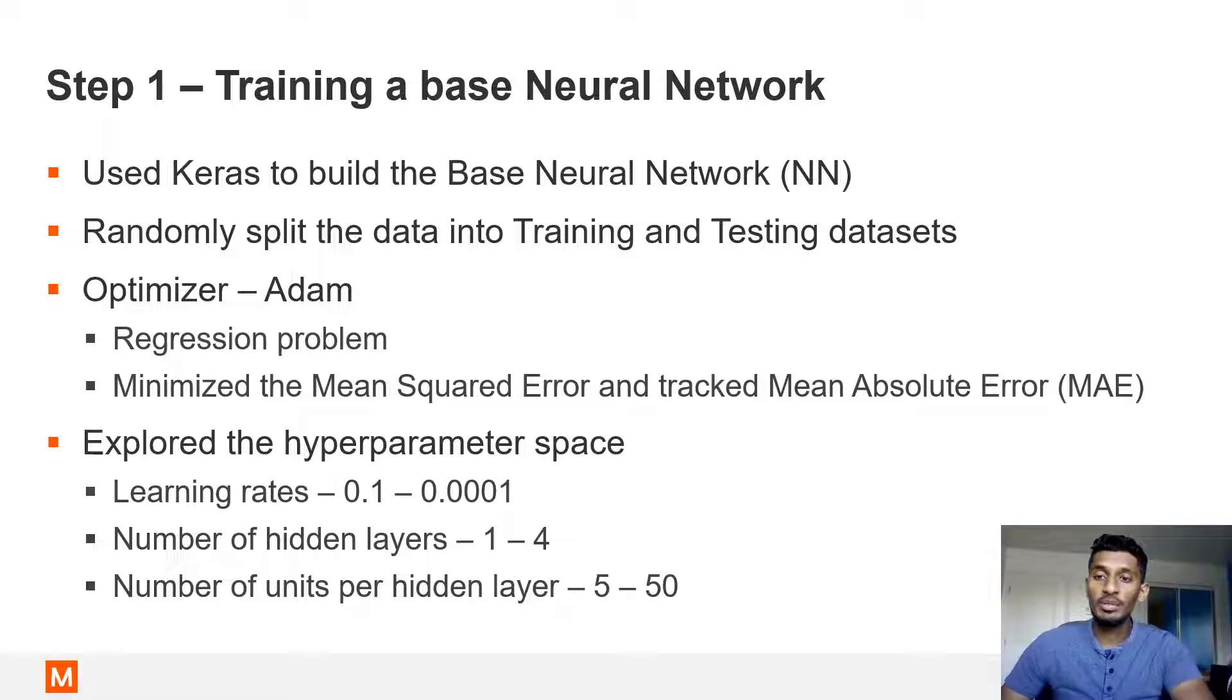We used the Adam optimizer to solve this regression problem. The objective was to minimize the loss function, which was the mean squared error, and also track the evolution of the mean absolute error, as this is a more convenient way of describing the accuracy of the trained neural network.